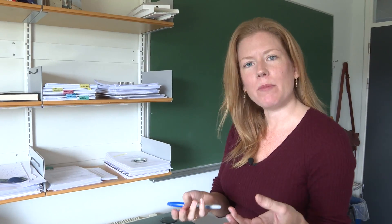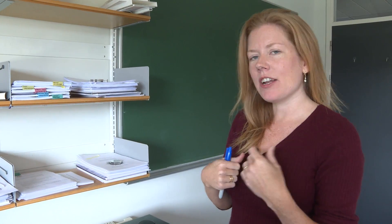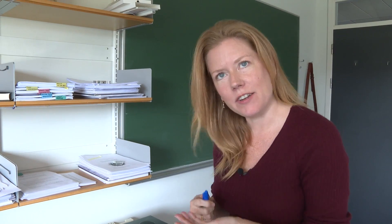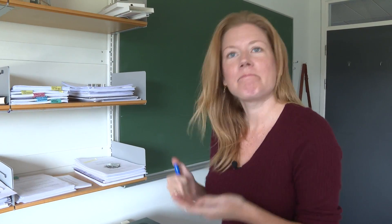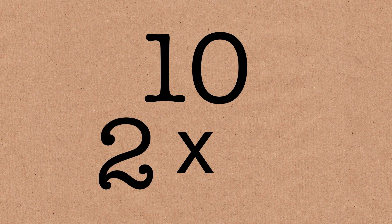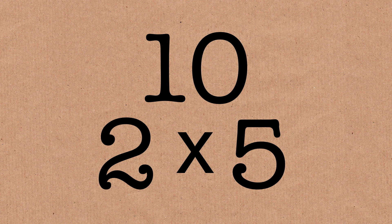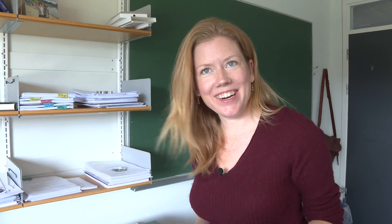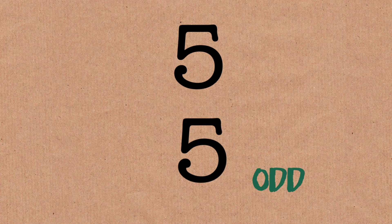If you take a random number, is it more likely to have an odd number of prime factors or an even number of prime factors? Take 10 — it breaks down as 2 times 5, both prime, so it has two prime factors, an even number. But any prime number, like 5 or 2, only has one prime factor, so it has an odd number of prime factors.